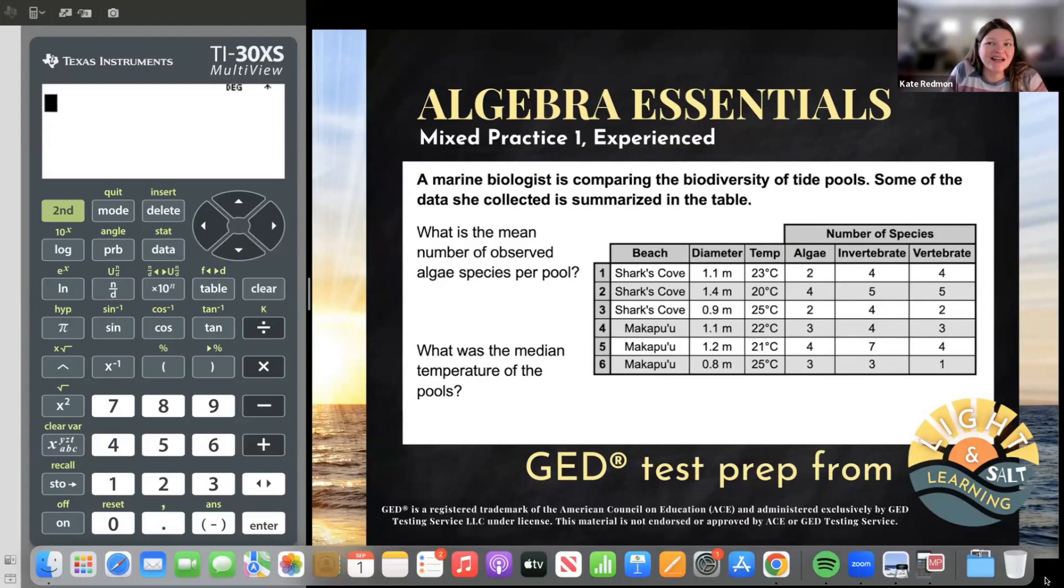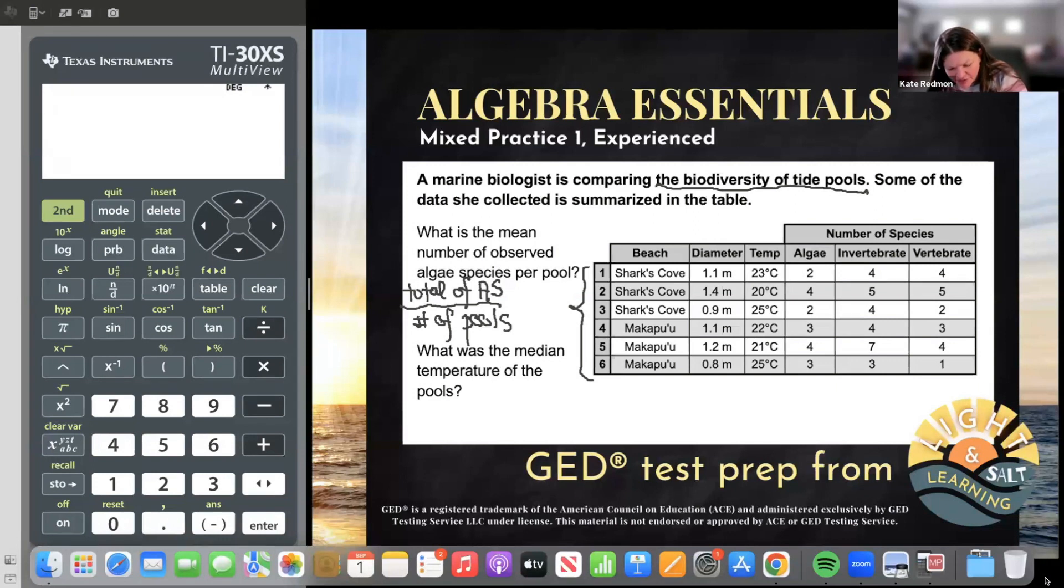Now just in general, the GED subject tests love to give you information in tables. So I think really the only skill here with a table is knowing where to look. So let's look at our question one more time. It says, what is the mean number of observed algae species per pool? So we said here that we were going to do the total. If we're looking for the mean number of observed algae species, that would be the total of the algae species. And if it's per pool, then that's going to be divided by the number of pools. So it looks like since this table they say is comparing the biodiversity of tide pools, and we see these numbers here with some information going across, looks like these are the tide pools. We've got six of them.